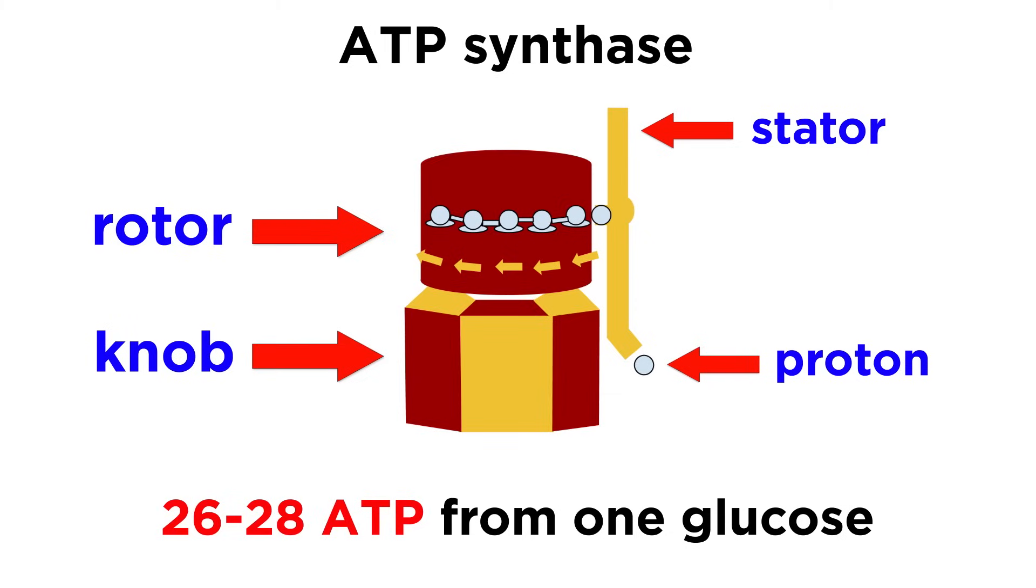With the NADH and FADH2 that is generated from a single molecule of glucose, we can get around 26 or 28 ATPs from this activity, so this is the pathway that generates the majority of cellular energy.